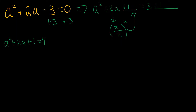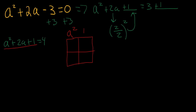Now I can factor a² + 2a + 1, and I can use the magic box for that. In the magic box, we have a² here, 1 here, and 2a here.